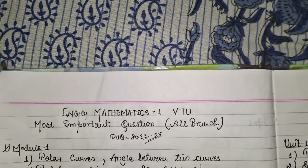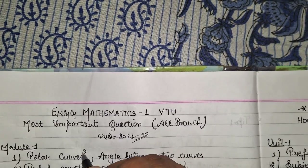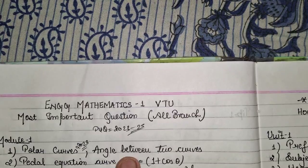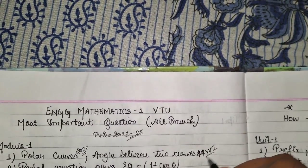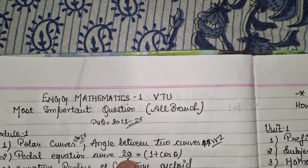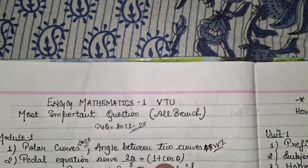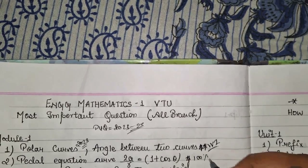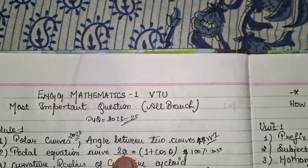Let's start with Module 1. Question one is on polar curves — specifically the angle between two curves, which was asked in 2023. This is a very important question. Question two is the pedal equation of a curve: 2a/r = 1 + cos θ, which was asked in 2024. The pedal equation is 100% likely to appear in 2025.